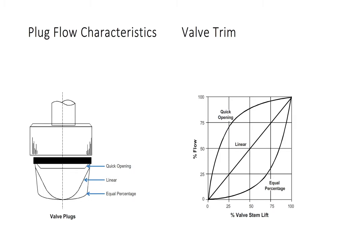Pause for a moment and ask yourself, which plug would you want in a valve to control water flow? Many people choose the linear shaped plug as the logical choice. Linear is the incorrect choice. As we shall discover, the equal percentage plug is most often the best choice for good flow control.